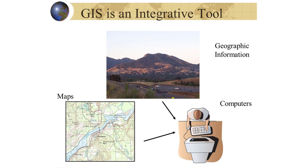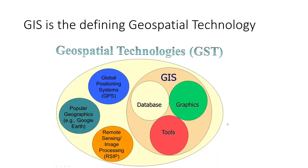GIS is an integrative tool in the sense that it integrates data and information from a wide array of sources. Geographic information can come from a variety of sources — familiar photos, field surveys, wildlife surveys or transects, global positioning systems, satellite imagery, and of course maps. Your basic topographic map is represented here. But the idea is that by taking maps and information about the environment and combining those on computers using software, apps, and related tools — this is what GIS provides us with.